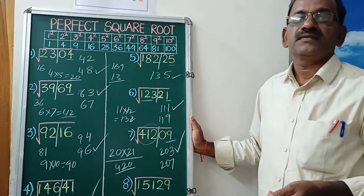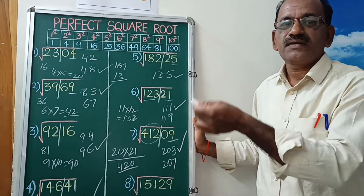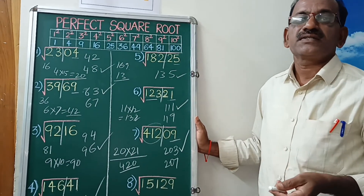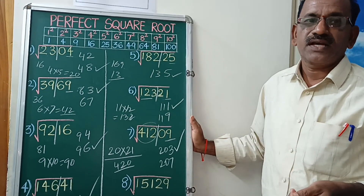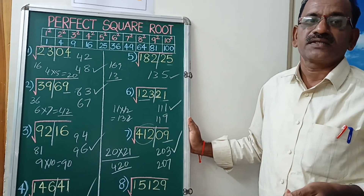You can find square roots of large numbers within seconds using this method. Thank you for watching.